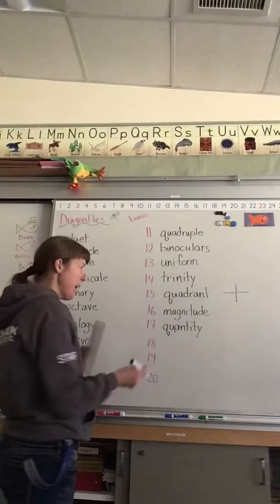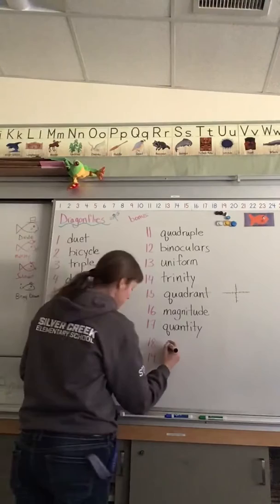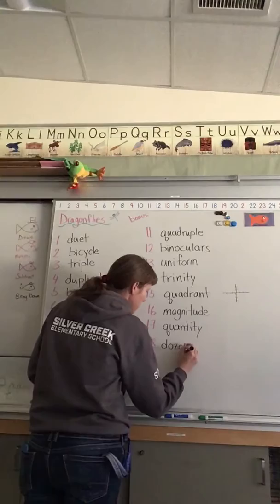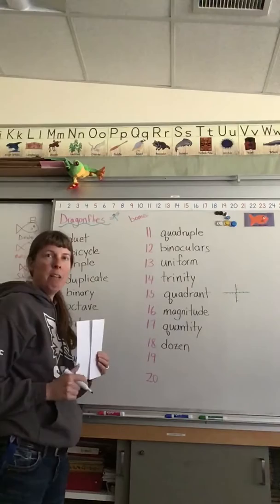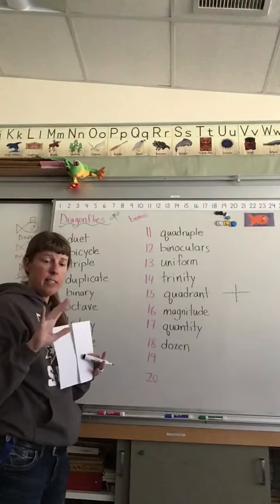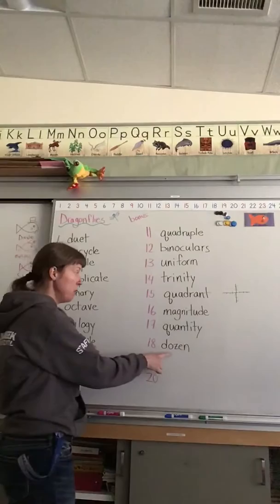Number eighteen, dozen. You might wish that there were only a dozen spelling words, but too bad. If you remember your French, le français, and you're counting, we've got un, deux, trois, quatre, cinq, six, sept, huit, neuf, dix, onze or eleven, and douze for twelve. Douze, douze, dozen. There's going to be twelve of them.